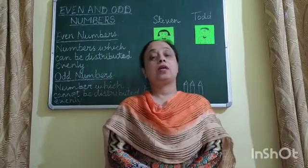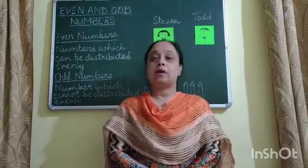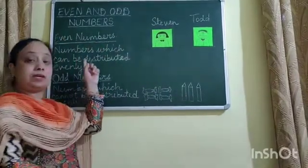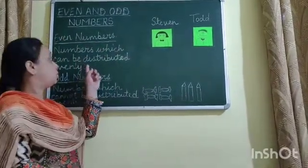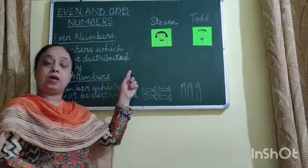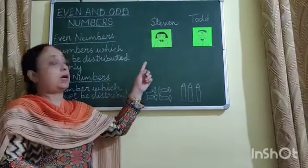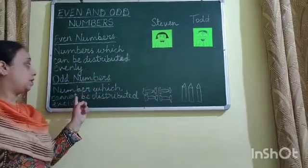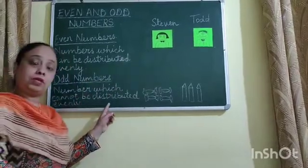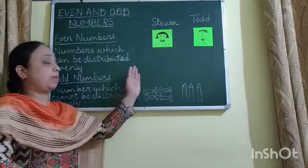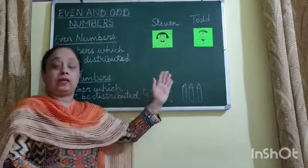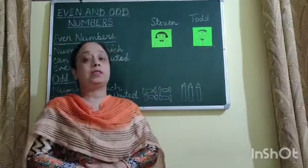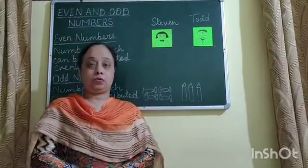Today I have brought a new topic for you: even numbers and odd numbers. Even numbers are the numbers which could be distributed equally or evenly among two people. Odd numbers are the numbers which cannot be distributed equally or evenly among two people. Even numbers can be divided by two, but odd numbers cannot be divided by two.